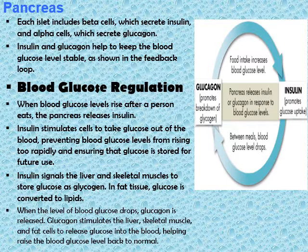On the contrary, when the level of blood glucose drops, glucagon is released into the bloodstream through alpha cells. Glucagon stimulates the liver, skeletal muscle, and fat cells to release glucose back into the blood, helping to raise the blood glucose level back to normal.